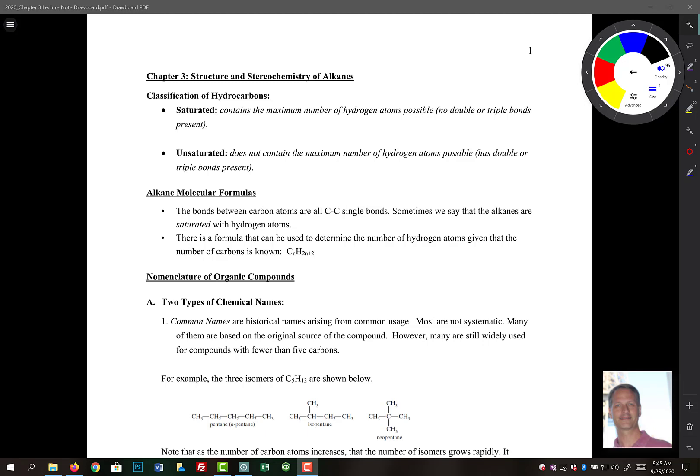There's two classifications of hydrocarbons. The first type that we can have is a saturated hydrocarbon. Those are going to contain the maximum number of hydrogen atoms possible. Really what this means for us is that there's no double or triple bonds present in the molecule.